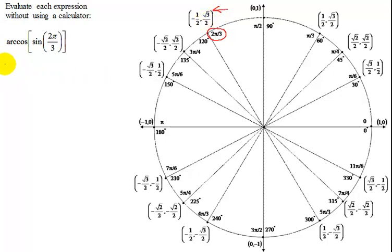So the sine of 2π over 3 is the y coordinate, so it equals the square root of 3 over 2. So that means I need to find the arc cosine, or the inverse cosine, of square root of 3 over 2.